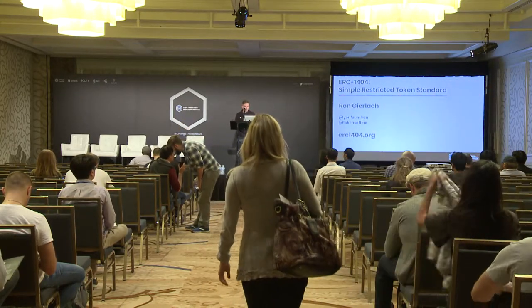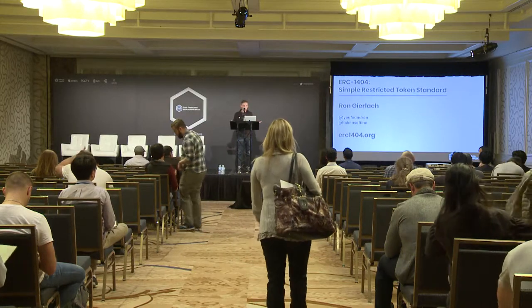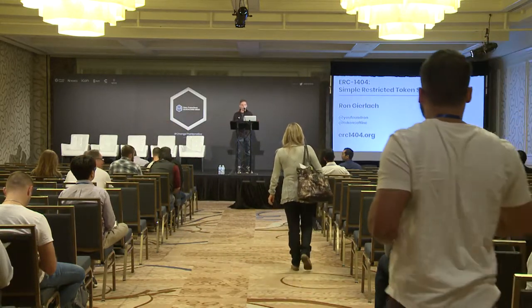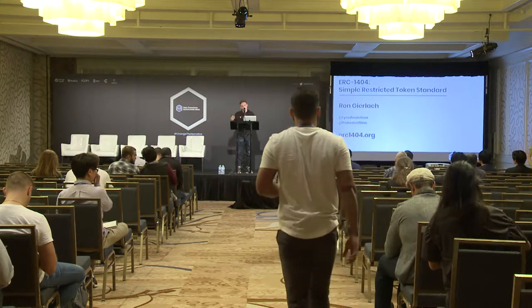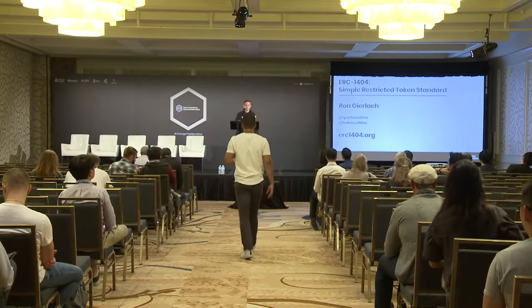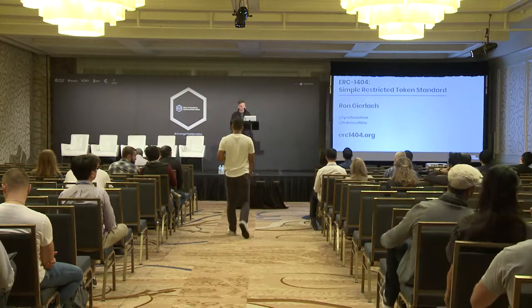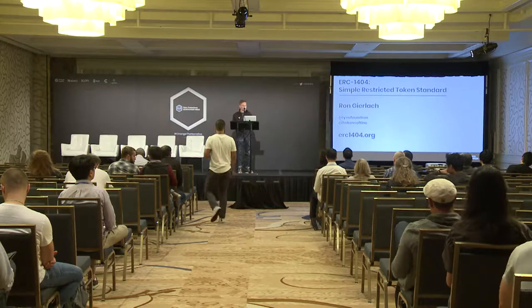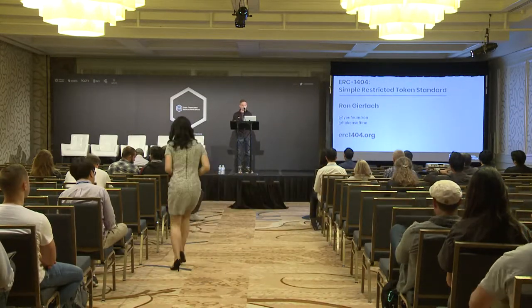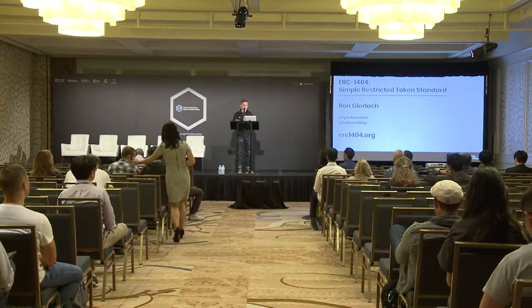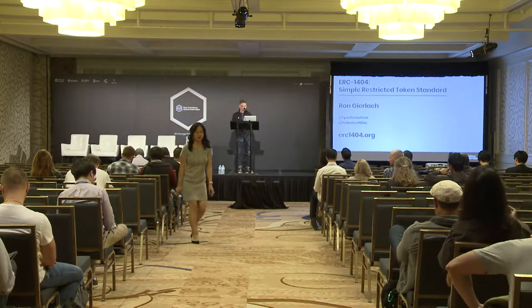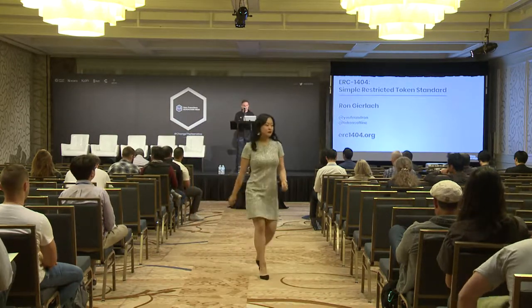I'm going to briefly give some context by introducing ERC-20 tokens on Ethereum — something probably everyone here is familiar with — but I want to actually look at how the transfer function is implemented. Then I want to define what an Ethereum-based security token is and why they might be a big deal. And lastly, we're going to take a technical look at our standard, ERC-1404, and its implementation, and discuss paths ahead for security token adoption and further standardization.